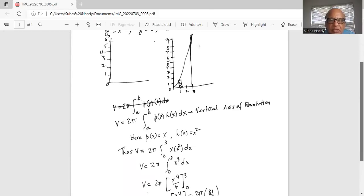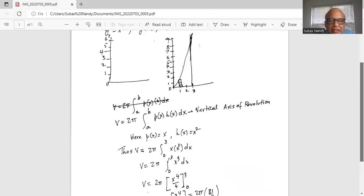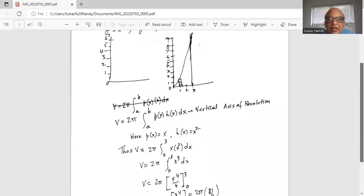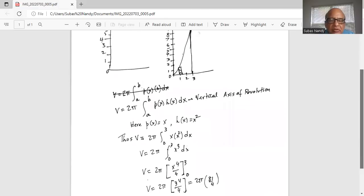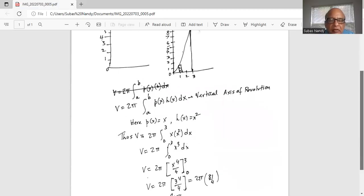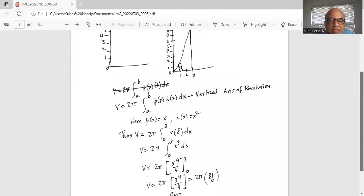When we substitute p(x) and h(x) into the integration, limits of integration are from 0 to 3. So we have volume equals 2π integral from 0 to 3 of x times x-squared, which is x-cubed dx.